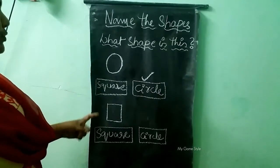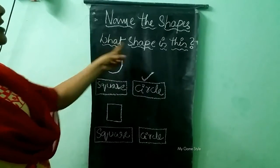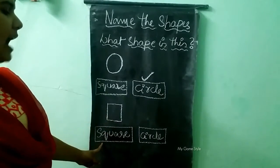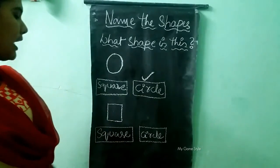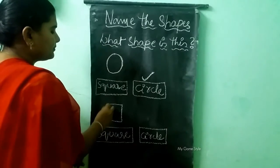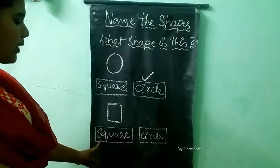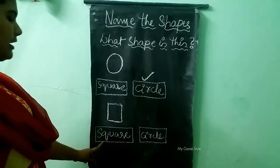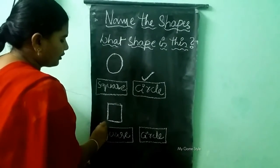And the next one. What shape is this? Square or circle? Tell me, children, what is this shape? Square. Is it the correct answer? So we need to tick here — square.